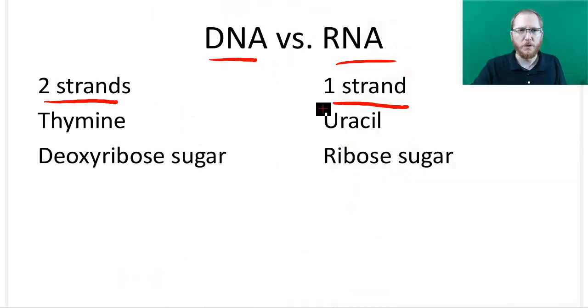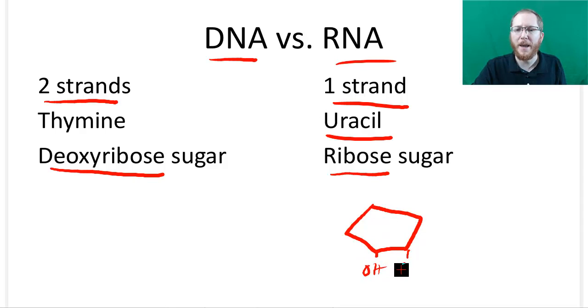There will be uracil instead of thymine. That's a giveaway. The other thing is it has a different sugar. The sugar on the surface will look pretty much exactly the same. All you'll notice, if you really paid close attention, is at the bottom of the sugar, one of them will have two OHs. You don't have to know this, but I'm showing you. Whereas when you look at DNA, it's basically missing one of those oxygens. That's it. That's the whole deoxyribose. It's a ribose sugar that's missing an oxygen.